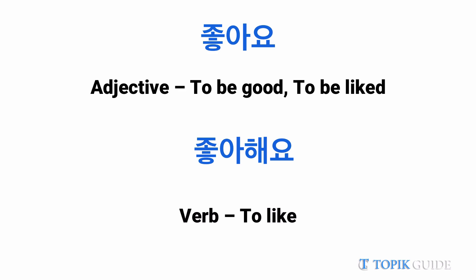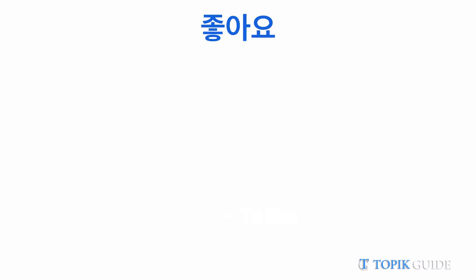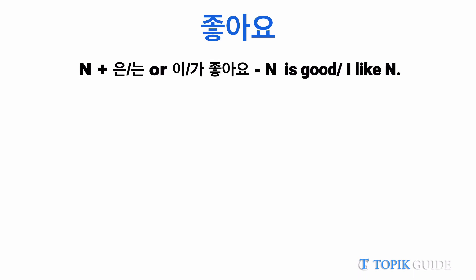On the other hand, chawahayo is a verb and it means 'to like something.' Let's see how these two words are used in sentences. When we use chawayo, we add 은/는 or 이/가 particles with the noun, and then we add chawayo. For example, we can say 'chayk-e chawayo' or 'chayk-eun chawayo,' and 'kimchi-nun chawayo.' It literally means 'kimchi is good' or 'the book is good,' but it can also mean 'I like kimchi' or 'I like this book.'